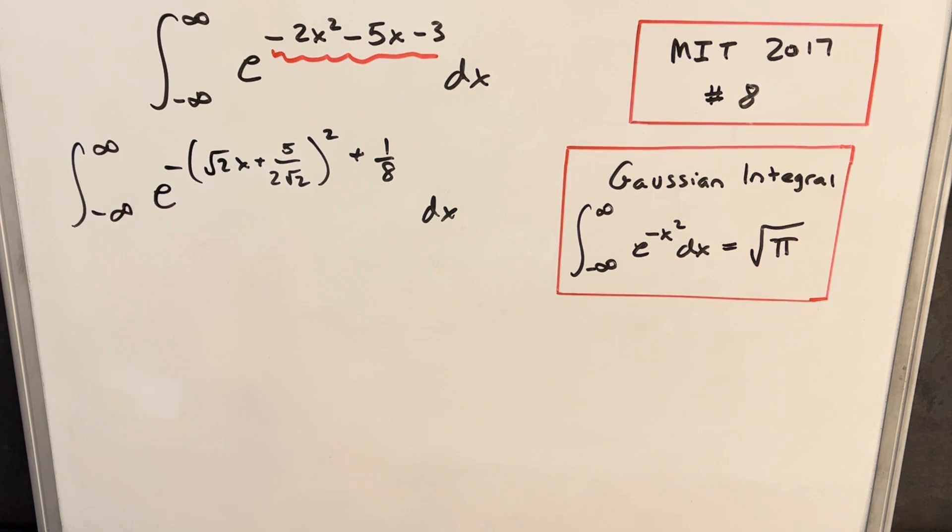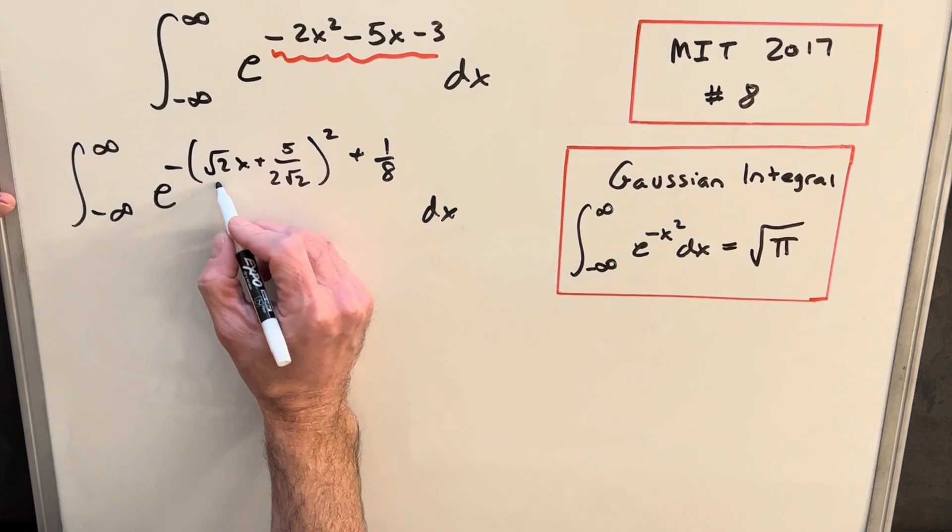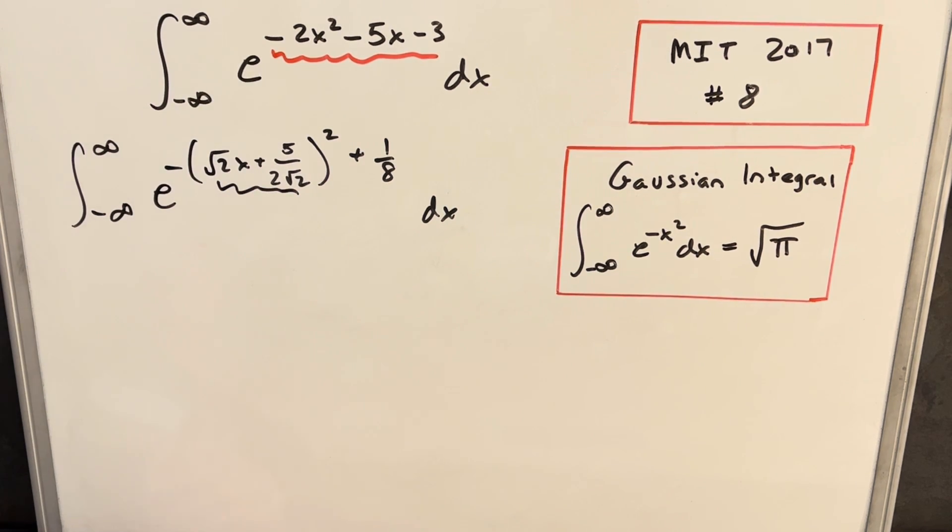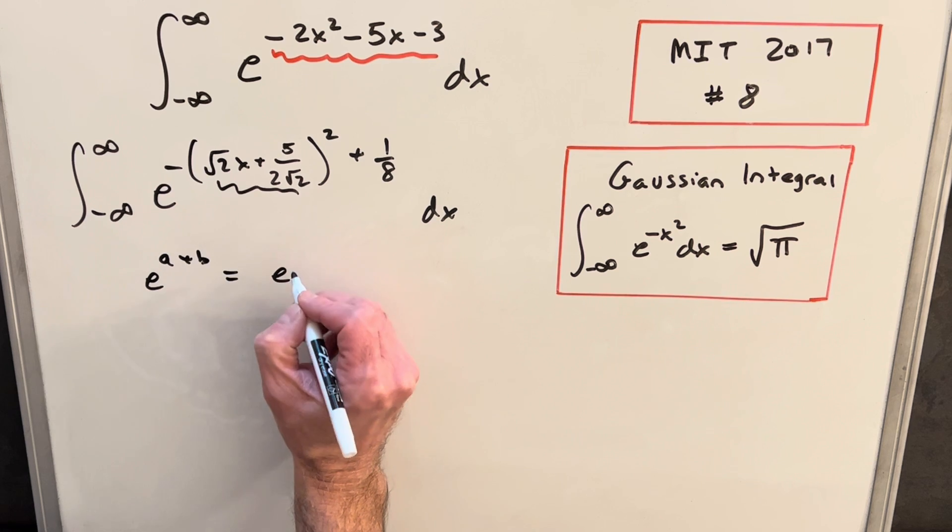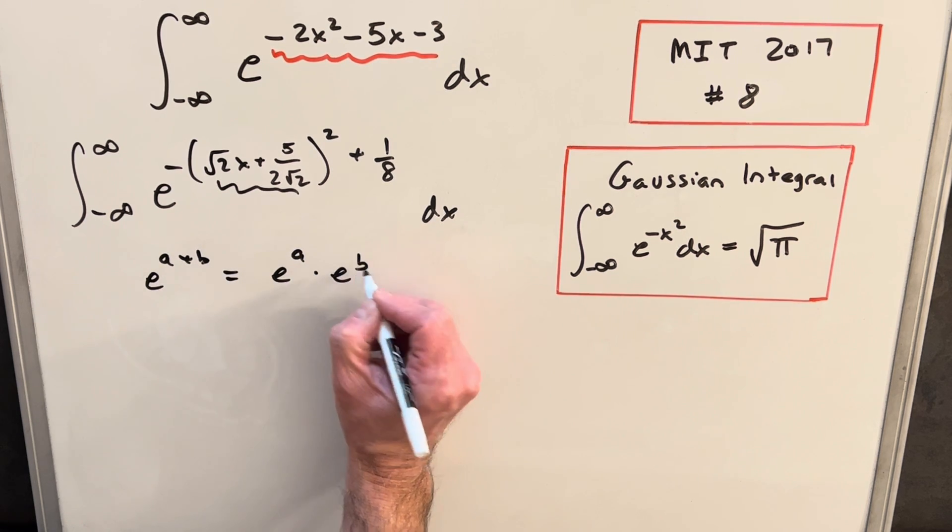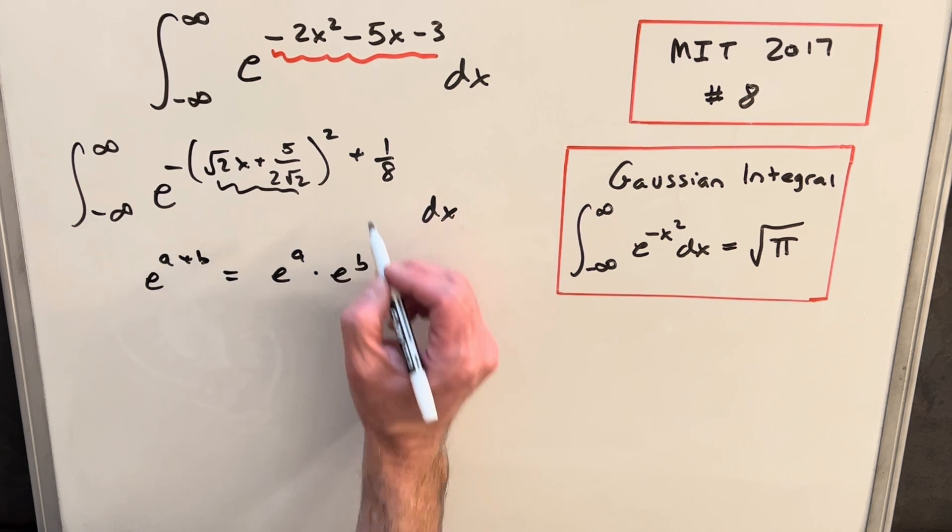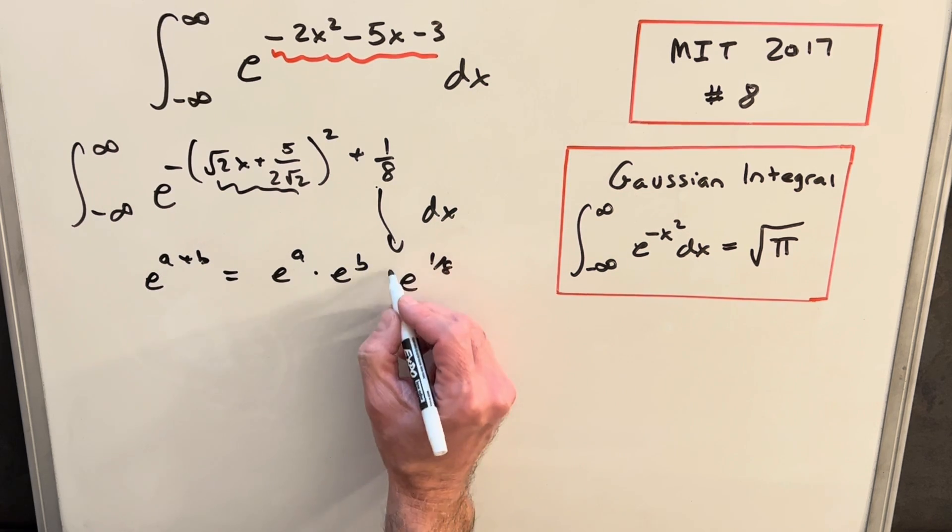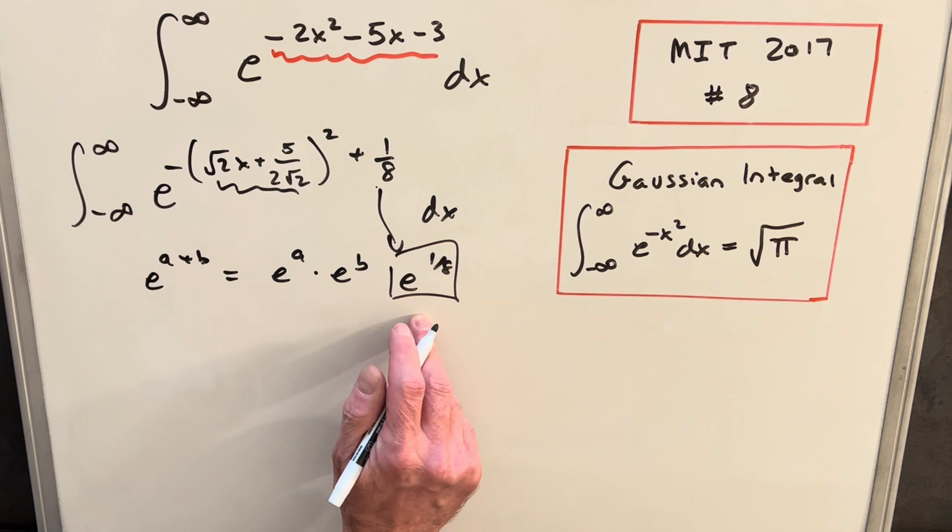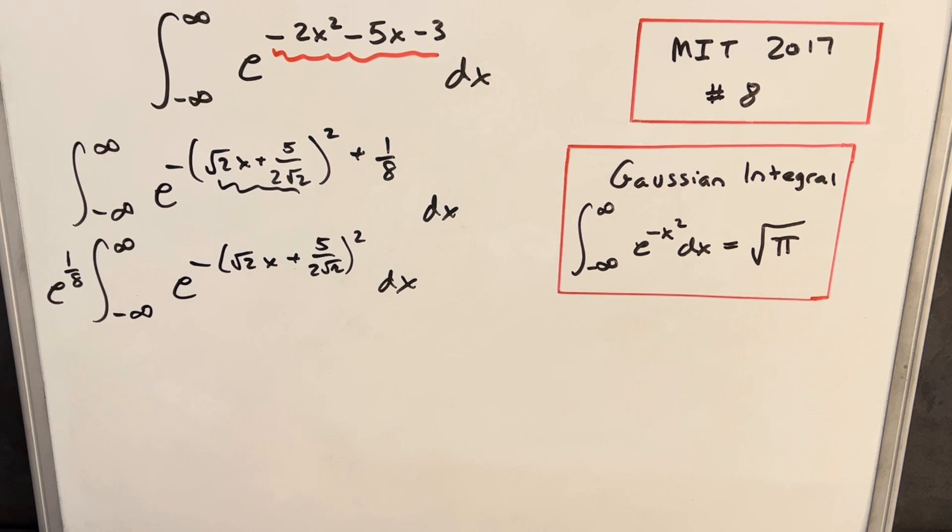So now after a whole bunch of algebra, you see that we've just rewritten our exponent. But we've got it now where we've really kind of isolated a squared term here. By exponent rules, if we have something, if we have e to the a plus b, we can write this as e to the a times e to the b. Well, when we do that, we just have here, this is going to be e to the 1 8. And this is actually just a constant value that we can bring outside of the integral. Now we have our e to the 1 8 out front of the integral.